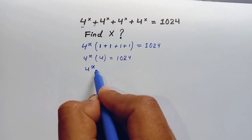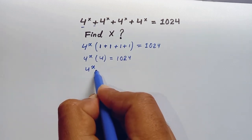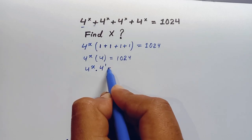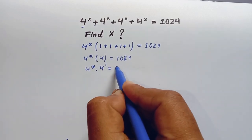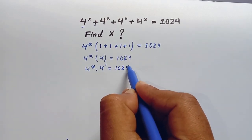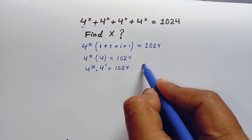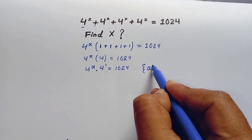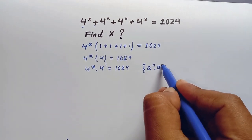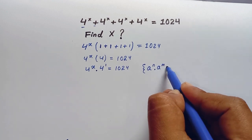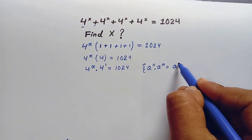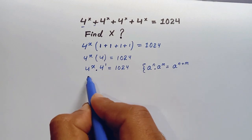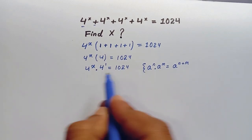Now 4 to the power x into 4 can be written as 4 to the power x times 4 to the power 1, which equals 1024. We use the identity that a to the power n times a to the power m can be written as a to the power n plus m. Let us use this identity here.